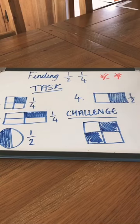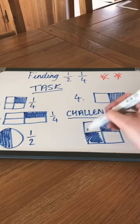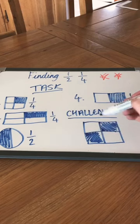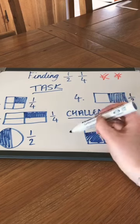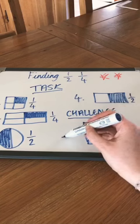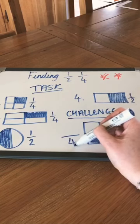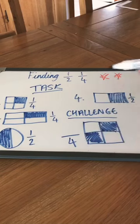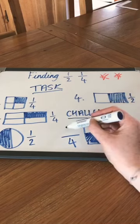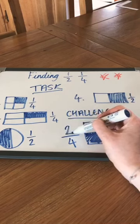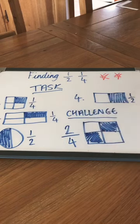For our challenge, we had to work out what the fraction was. Count how many parts there are — one, two, three, four — so we know the bottom of our fraction is four and it's split into quarters. Count how many parts are shaded: that's one and two, so only two parts are shaded. So we have two quarters of the shape shaded.